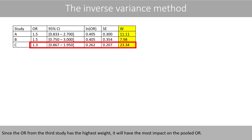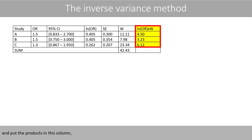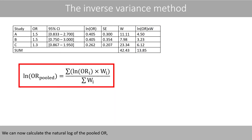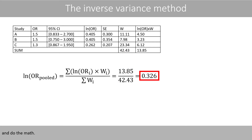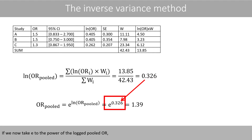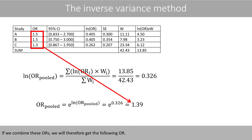Since the odds ratio from the third study has the highest weight, it will have the most impact on the pooled odds ratio. We sum the weights, then multiply the logged odds ratios by the weights and sum those products. We can now calculate the natural log of the pooled odds ratio by dividing the sum of the products by the sum of the weights. Taking e to the power of the logged pooled odds ratio gives us the pooled odds ratio.